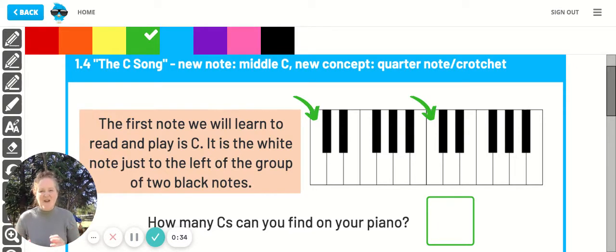Okay, so here we go. We are on unit 1.4 and this correlates with the C Song in the level one Supersonics book. But you can also just be joining us to learn theory and have some fun.